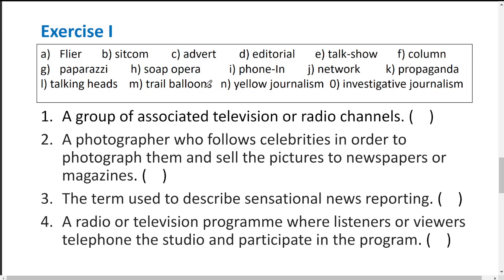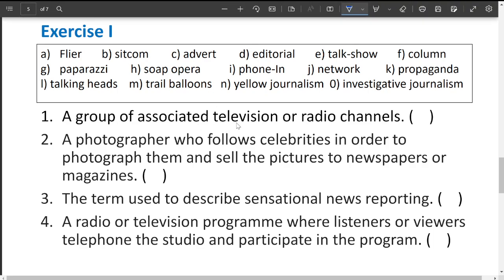Now we move to Exercise 2, which also has 15 sentences where you have to choose a proper option for each. The first one: a group of associated television or radio channels. All together, this is called a network — an association or group of all these television or radio channels.